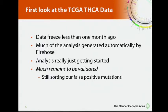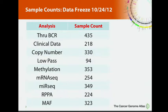This is the first look at the data. We did a data freeze about just less than a month ago. Much of what I'll show you today was generated by the Firehose platform. We're really just getting started, and much of this has not been validated. We're pretty far along in the project, and the remaining cases are in the pipeline. We're thinking we might wait until we pull it out to the full 500, but we're still discussing that.